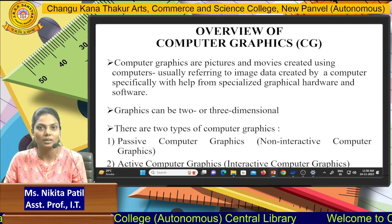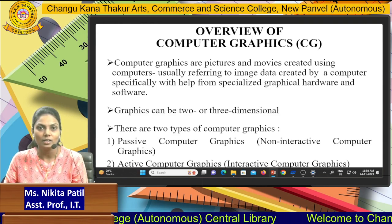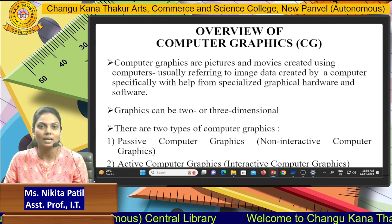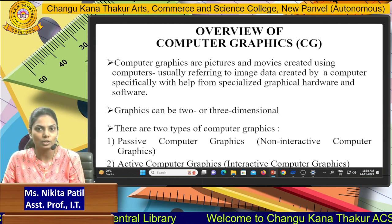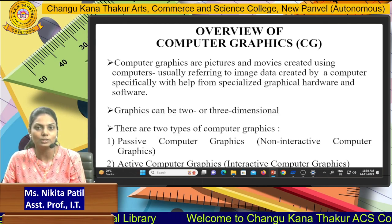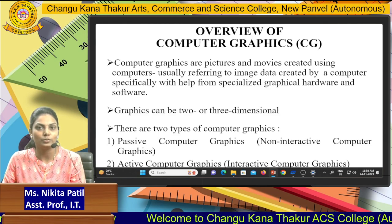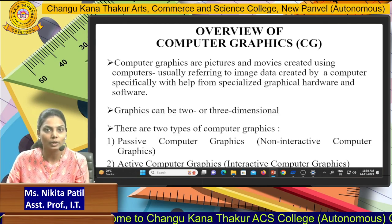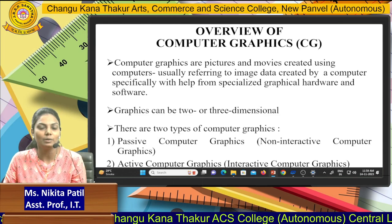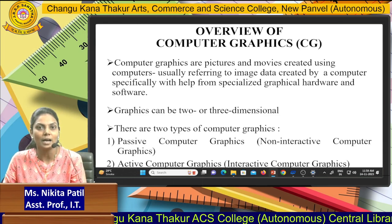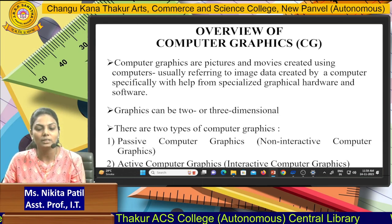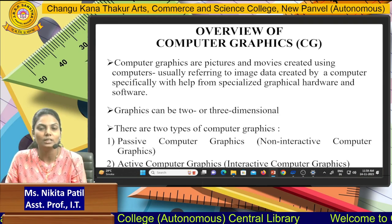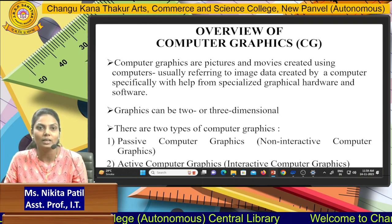Different hardware and software are available for computer graphics, including open source hardware and both free and paid software. With the help of software, you can design different types of graphics and animations. Graphics can be in two or three dimensions — we can create graphics using 2D and 3D dimensional axes.